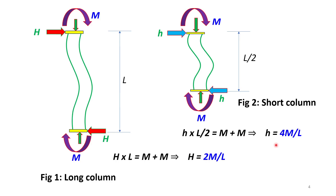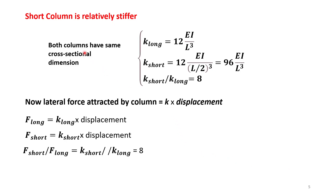The conclusion is: short columns suffer more shear force. Short columns are also relatively stiffer. The general formula for lateral stiffness of columns is 12EI / L³, where L is the column height. For the long column with length L, we get one stiffness value; for the short column with length L/2, substituting gives 96EI / L³. Taking the ratio of short column stiffness to long column stiffness, we get a value of 8. So the stiffness of the short column is 8 times higher than the long column in this particular case.